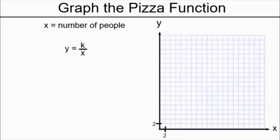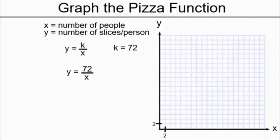If x is the number of people and y is the number of slices per person, then we can make y equals k over x have a k of 72. Therefore, we have the function y equals 72 over x.